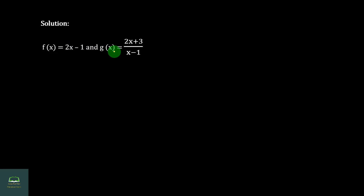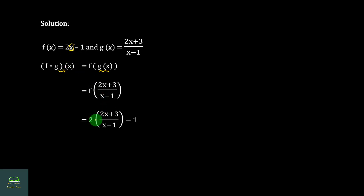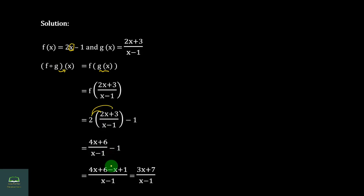F∘G: substitute g into f. g(x) = (2x + 3) / (x minus 1). So we set up: (2x + 3) / (x minus 1) minus 1. Multiply through by (x minus 1) on the numerator and denominator. We get (x minus 1) terms: a minus c below plus one. Working out: 0 plus 3a plus net plus 1 gives us 7 / (x minus 1).